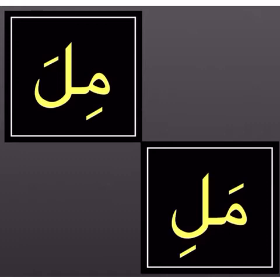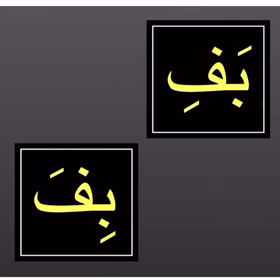Let's go to our next blocks. On the top block, the meme has a kasra — 'mi' — lam with a fath — 'la' — read together: 'mila'. The bottom block: meme with a fath — 'ma' — lam with a kasra — 'li' — read together: 'mali'.